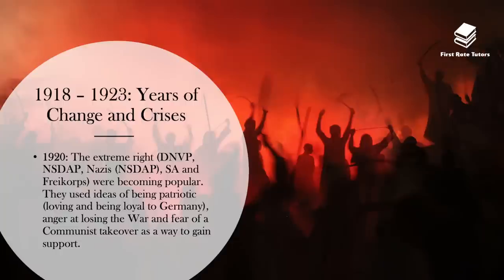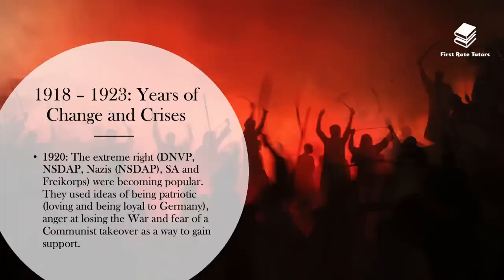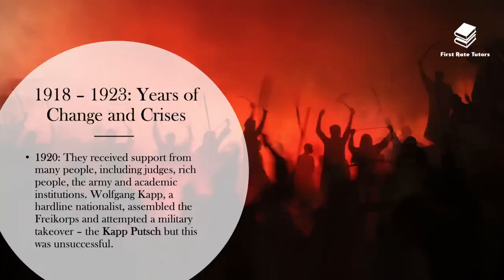In 1920, the SPD faced problems from the extreme right. The extreme right in Germany consisted of the DVNP, NSDAP — the Nazis — the SA stormtroopers, and the Freikorps, who were becoming really popular. They used ideas of being patriotic — loving and being loyal to Germany — as well as anger at losing the First World War and fear of a communist takeover as a way to gain support. They successfully received a lot of support from many people, including judges, rich elite people, the army and academic institutions. This led a man called Wolfgang Kapp, who was a very hardline right-wing nationalist, to assemble the Freikorps and attempt a military takeover, which was known as the Kapp Putsch. However, this was unsuccessful.